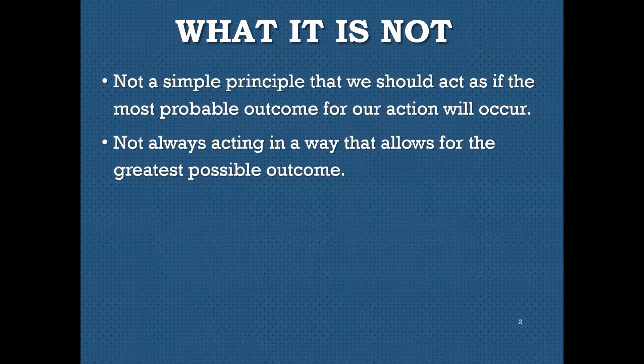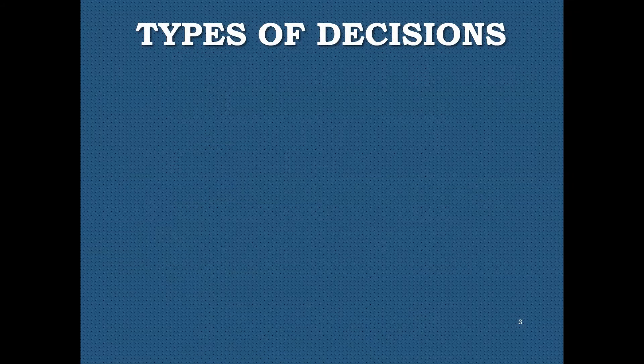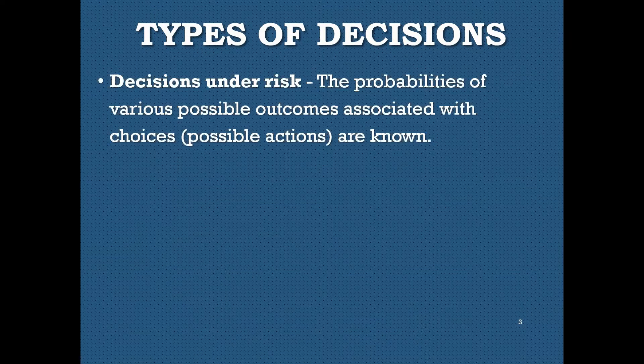So we need some principles here to guide us. What kind of decisions might we face in decision theory? The first one — and most interesting — is decisions under risk, which we'll focus on in this video. This is where you have some probabilities that you know. The probabilities of the various possible outcomes associated with your choices or actions are known, so you have good reason to think what the likelihood of a certain outcome is going to be given a certain action.